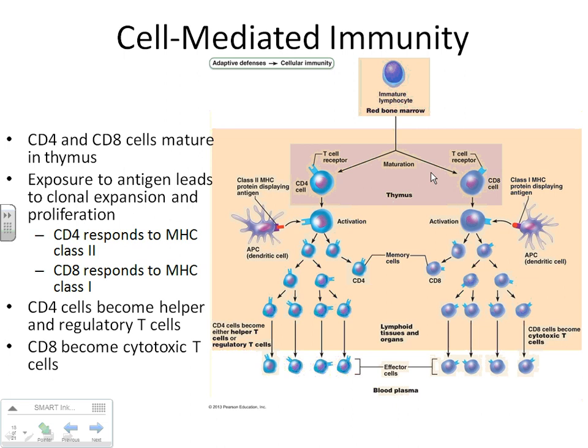A CD4 cell is what we call a regulatory and a helper T cell. The other group becomes a cytotoxic T cell. We abbreviate these: a helper T cell is called a TH cell, a regulatory T cell is a T-reg, and a cytotoxic T cell is a TC.